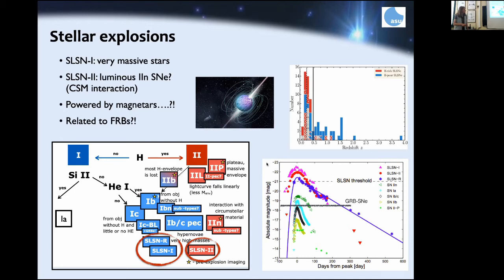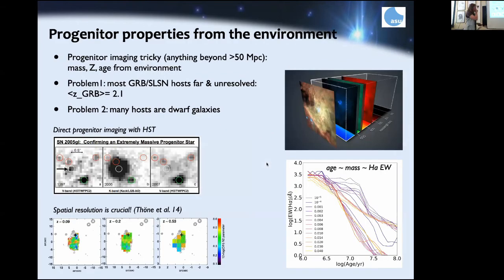At some point we thought the host galaxies of GRBs and superluminous supernovae might be similar, suggesting similar progenitor stars — though probably not. We still don't know what powers superluminous supernovae; possibly magnetars. This connection got people working on fast radio bursts (FRBs) interested, as FRBs are mysterious radio spikes first discovered about 10 years ago. We know that at least one galactic magnetar has produced a fast radio burst.